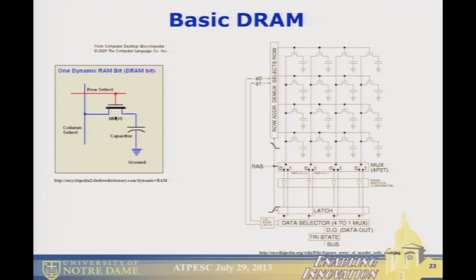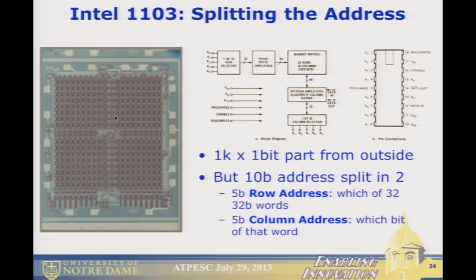An array consists of, say, four words of four bits each, with four row lines. When you turn a row line on, all those transistors read or write their bits to the bit lines. The Intel 1103 — the first commercial DRAM — was a 1-kilobit part. Its 10-bit address was physically split into a 5-bit row address specifying which word of 32 bits, and a 5-bit column address specifying which bit. This row/column address split persists today: DRAMs still use a row address and a column address.